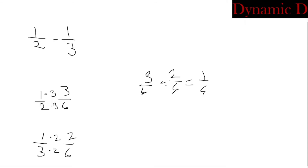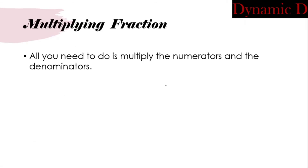Now we're going to move on to multiplying and dividing. I highly suggest you don't get them mixed up because they work differently. Just like adding and subtracting are inverse operations, multiplying and dividing are inverse operations too, so they will be similar to each other. Multiplying fractions is really easy — all you need to do is multiply the numerators and the denominators. For example, three-sevenths times five-eighths: you don't need any common denominator at all, you just multiply to get fifteen over fifty-six.